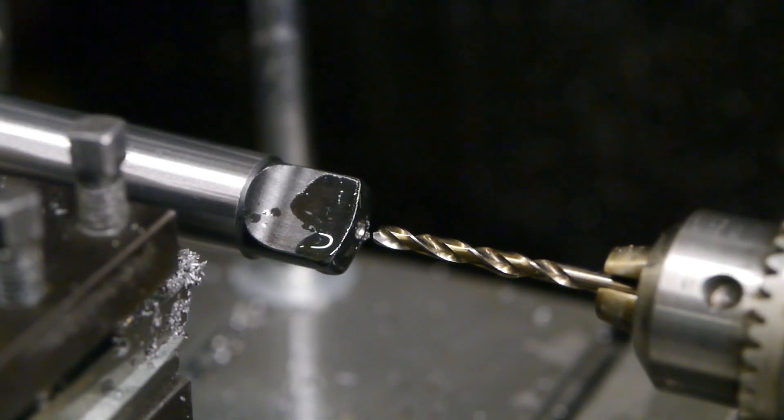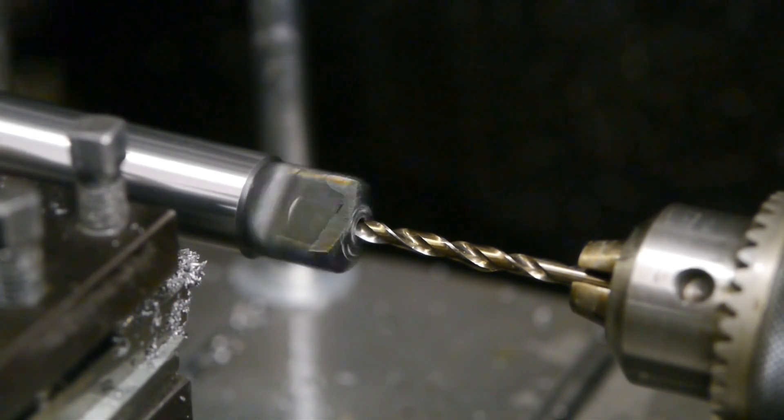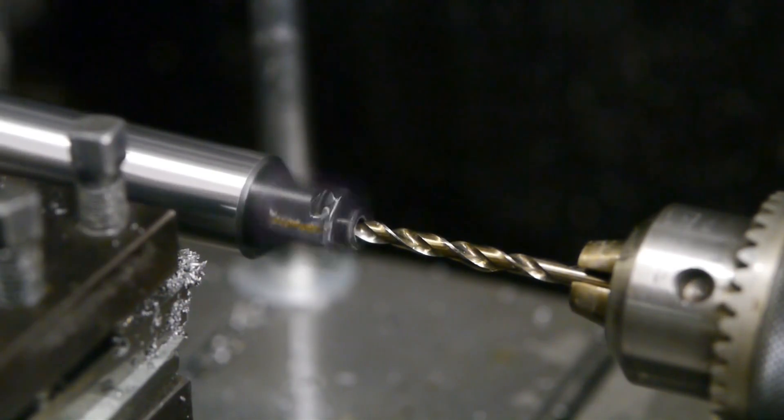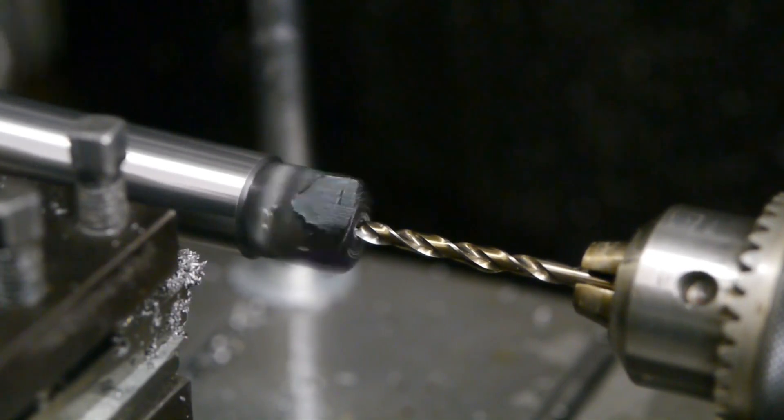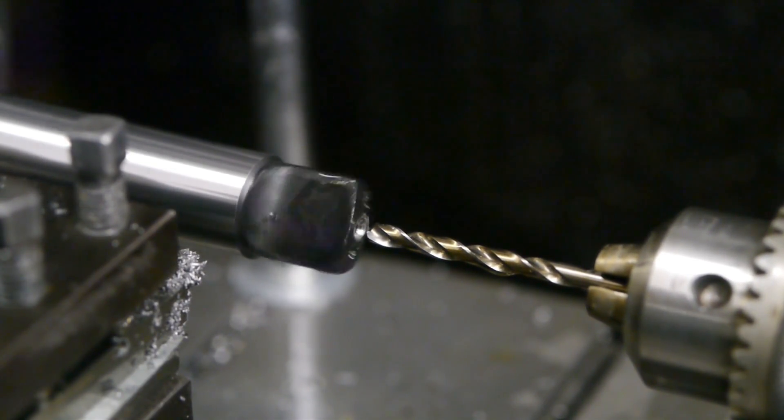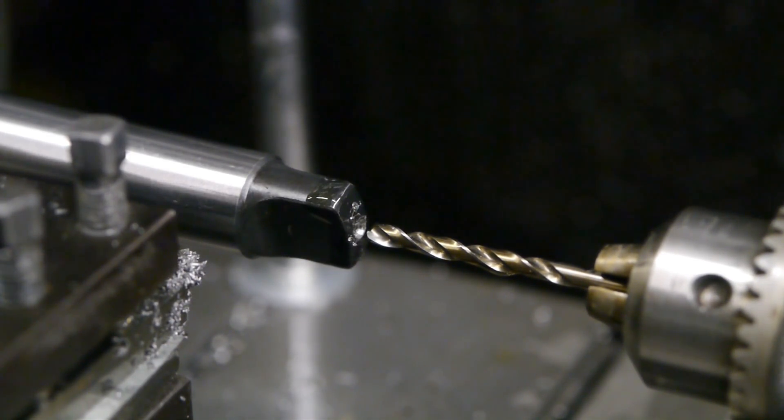I would like to modify the rear of this arbor so I can mount a drawbar, but I'm afraid this arbor is just too hard to machine. I'm gonna give it a try and see if I can drill into it. That's not going to work.